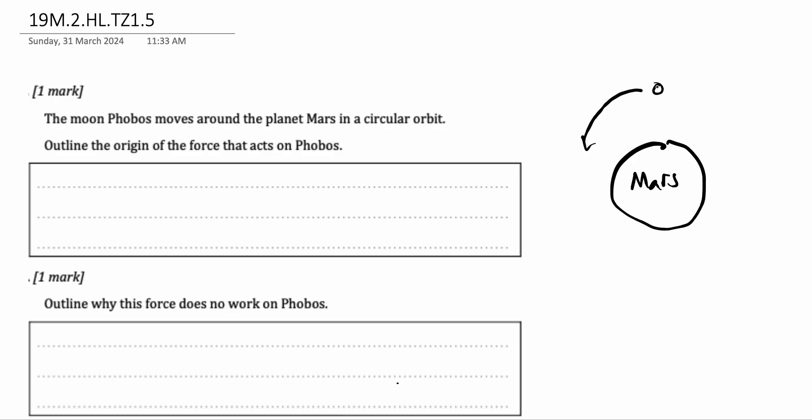Actually this moon should be going in a straight line but it's not. Why? It has a tangential velocity. The only reason it's kept in orbit of Mars is due to some pull of Mars. Some gravitational force that's keeping it seeking to the center. This is called a centripetal force.